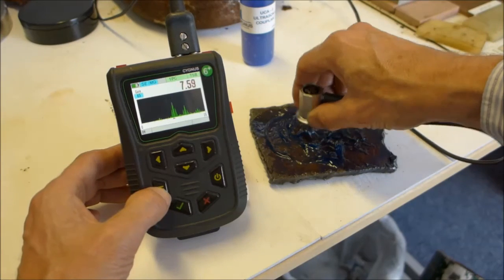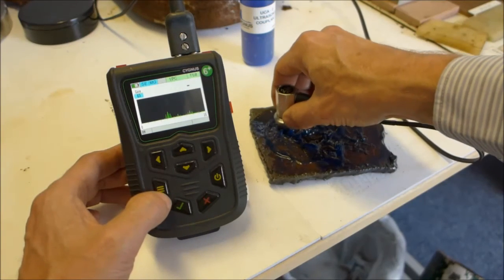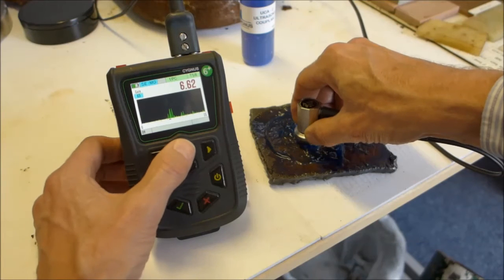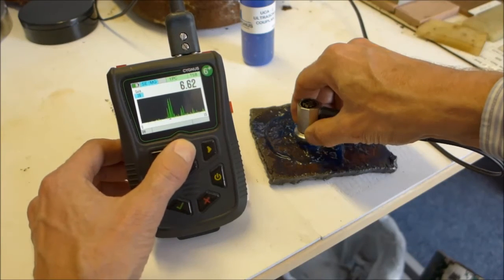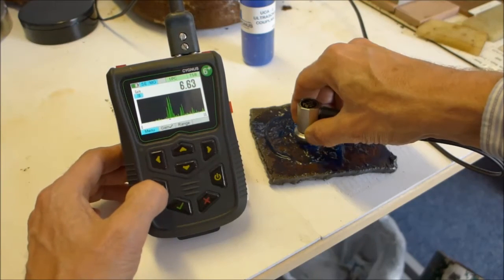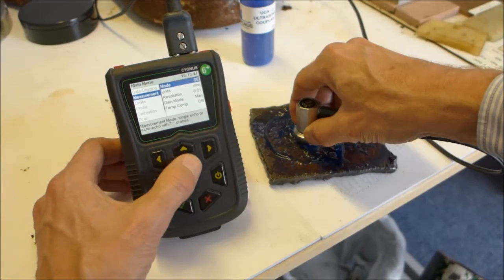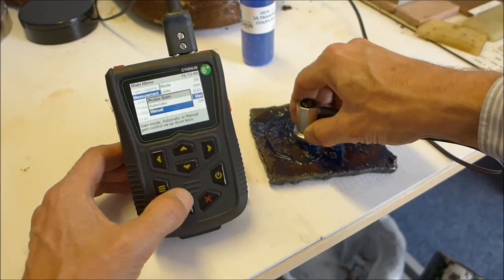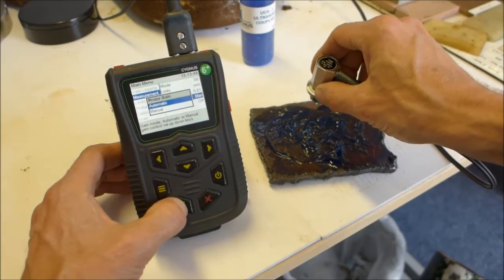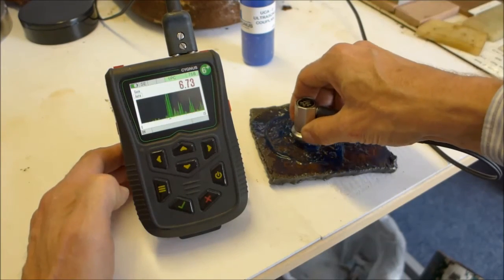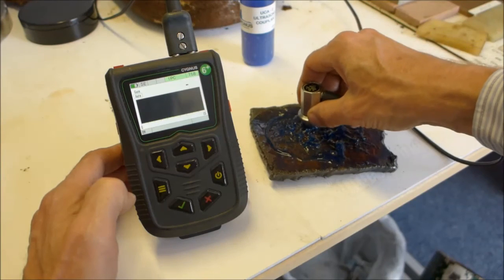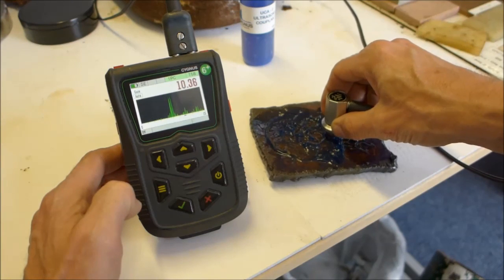When I have finished in manual gain mode, I can go back into automatic by just pressing the menu. Press the menu again, go down to measurement, across, all the way down to gain mode and back into automatic, and the gauge will now operate in automatic gain mode as normal as you can see.